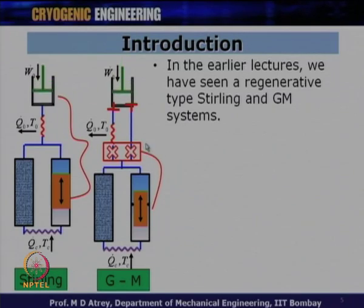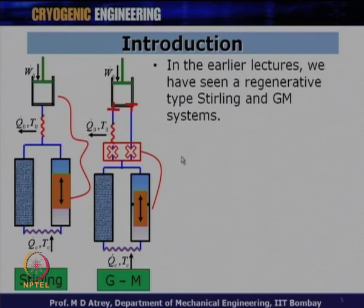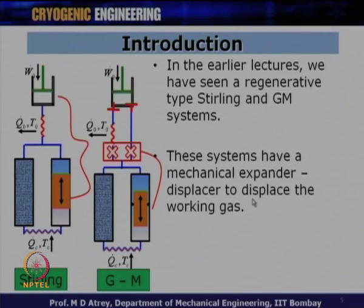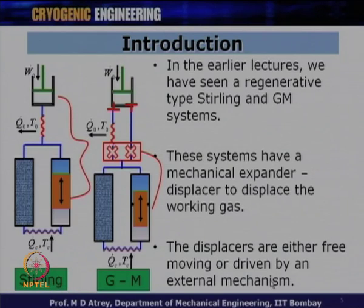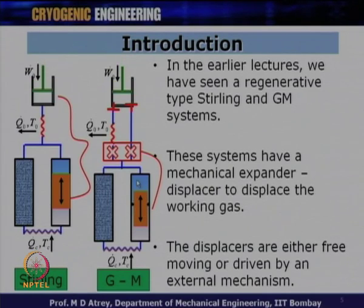In the GM cryocooler, the phase difference is between the valve mechanism and the displacer, which moves at a relatively low frequency. Both Stirling and GM systems have a mechanical expander-displacer to displace the working gas — either free-moving or driven by an external mechanism. In a free displacer, the piston moves because of the pressure drop across it. The displacer is normally a very lightweight moving component.